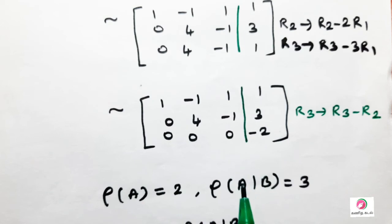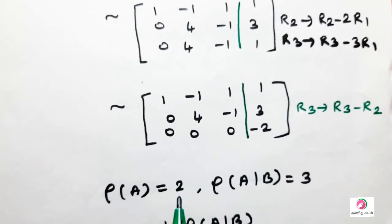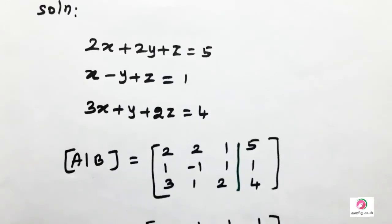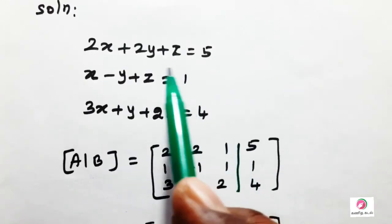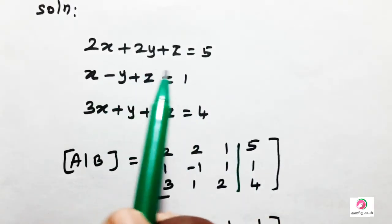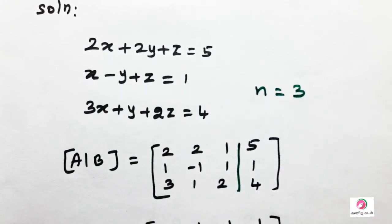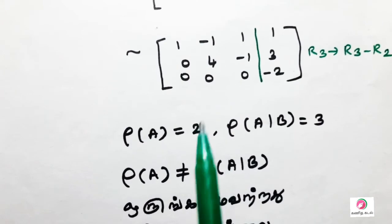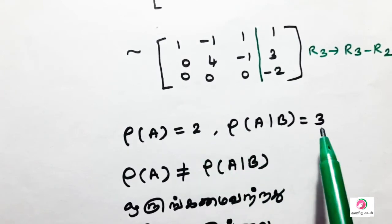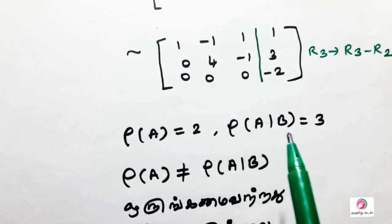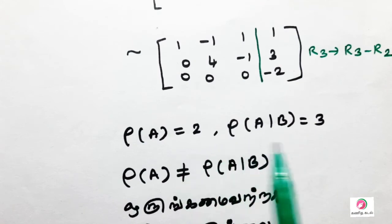There are three equations. There are unknown variables, so n is equal to 3. The condition is: rank of A is not equal to rank of A|B.